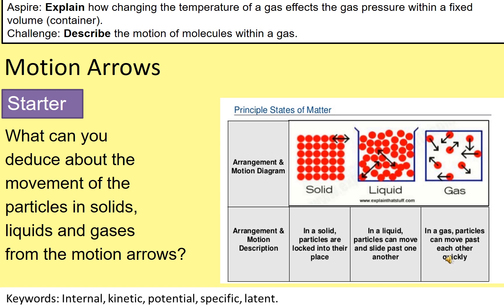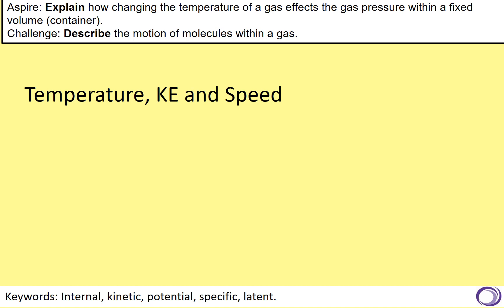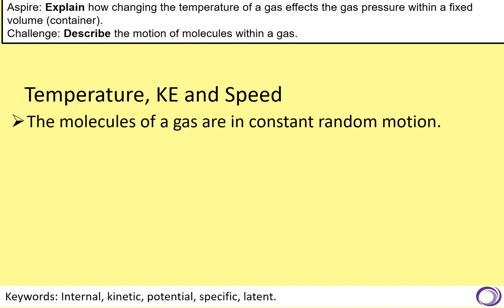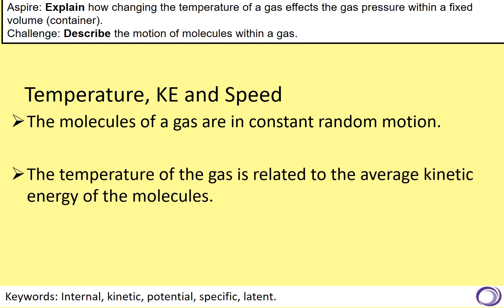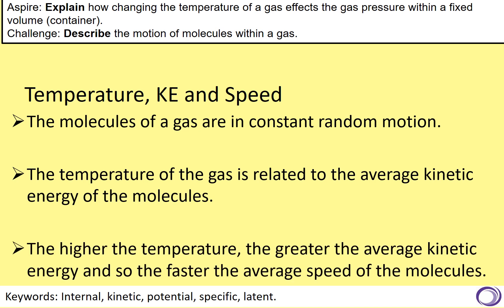Hopefully you've realized that solids are all together — they just vibrate in one place; liquids can go past each other; but gas particles go all over the place. I'm going to talk about how temperature, kinetic energy, and speed are related. In molecules of gas they are constantly moving around, and as we talk about temperature, that is related exactly to the kinetic energy of those molecules. The higher the temperature, the greater the kinetic energy, and so the faster the speed of the molecules.